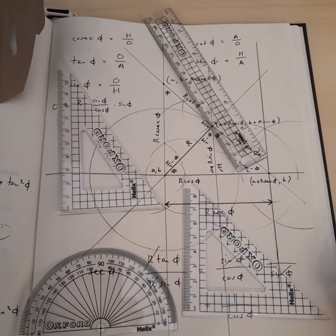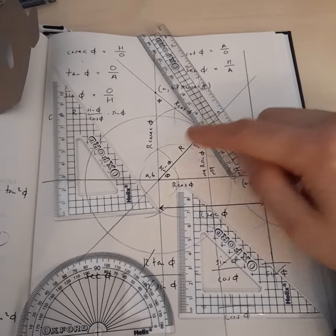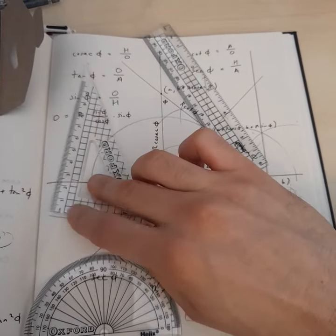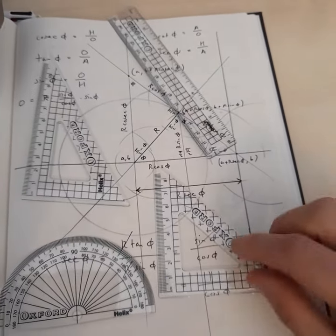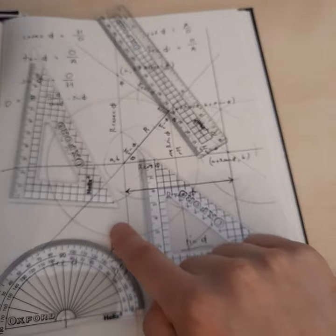So what comes with it? Well, you get a 15cm ruler, a right-angled straight edge, another one which has the same lengths over here.